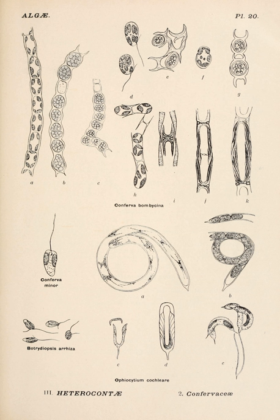Order Heterotrichales: Family Tribonemataceae, e.g., Tribonema; Family Heterocloniaceae, e.g., Heterodendron. Order Heterosiphonales: Family Botrydiaceae, e.g., Botrydium.